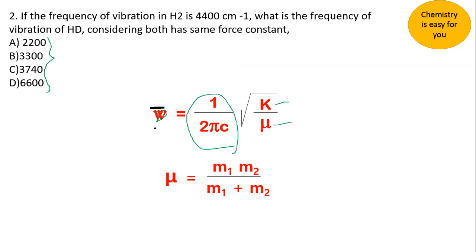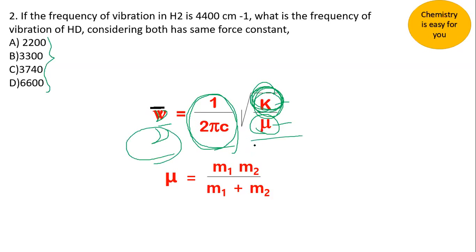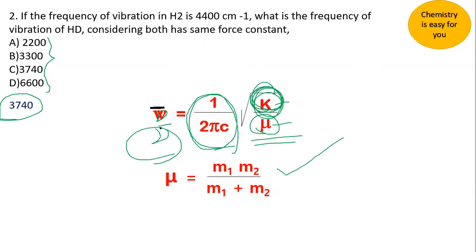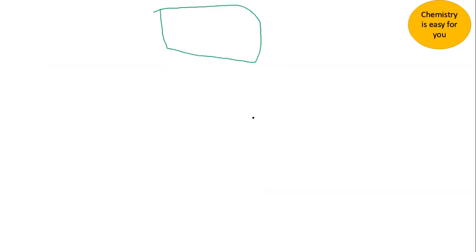Since all other values are constant and the force constant k is the same for both molecules as stated in the question, the vibrational frequency depends purely upon the reduced mass μ, given by m1·m2/(m1 + m2). Because frequency is inversely proportional to the square root of reduced mass, the ratio becomes ν1/ν2 = √(μ2/μ1).